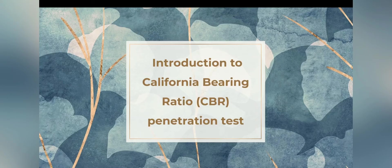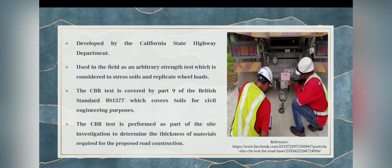My name is Akram Shamie bin Zuraini. Now I'm going to present about the introduction to the California Bearing Ratio penetration test. The CBR test was first developed by the California State Highway Department and is used in the field as an arbitrary strength test considered to stress soils and replicate loads. The CBR test is covered by Part 9 of the British Standard BS 1377.